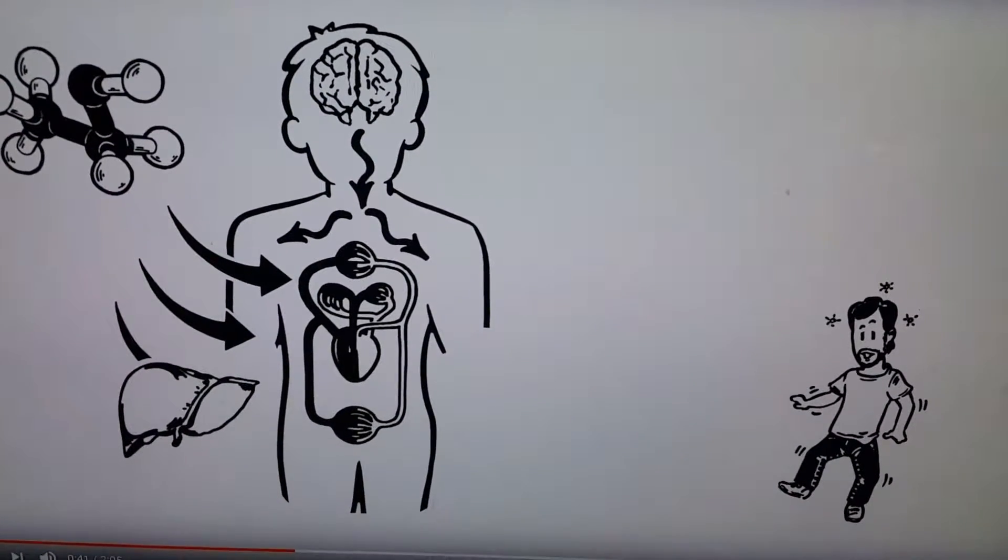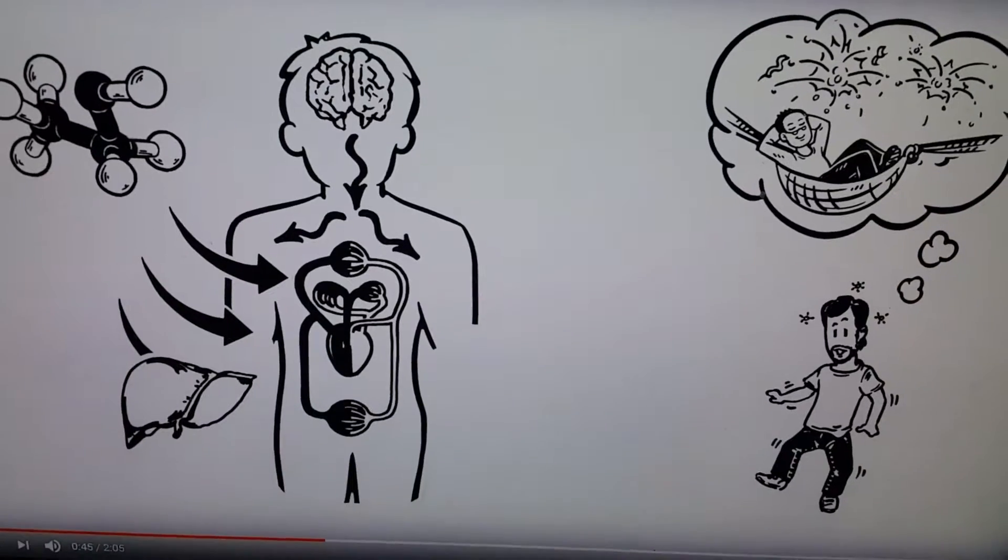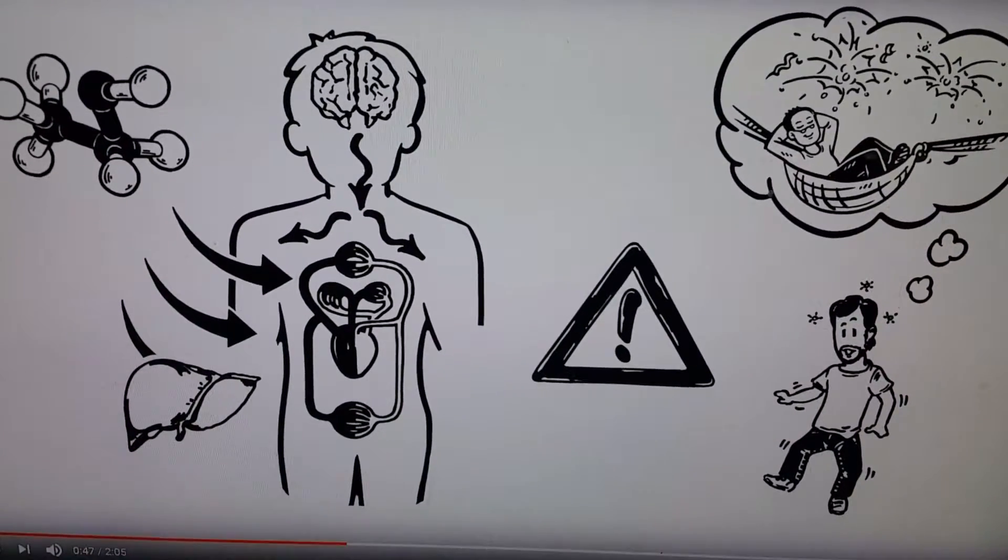It changes the signals coming from the brain to other parts of the body. This causes the euphoric and good effects of alcohol.